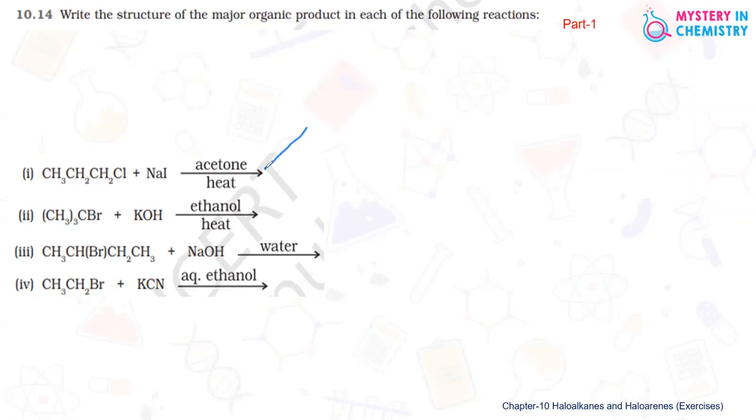So the compound formed is CH3-CH2-CH2-I plus sodium chloride and this is 1-iodopropane. So this is the major compound.